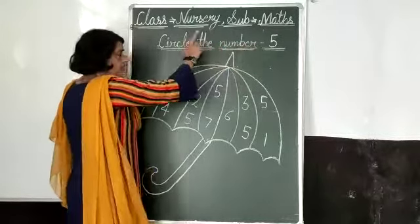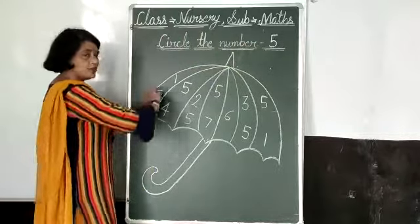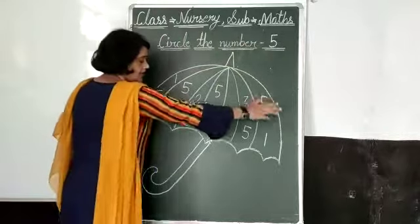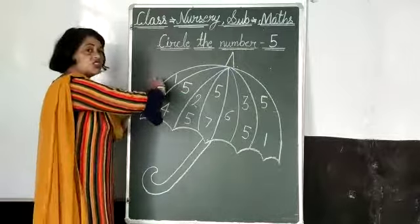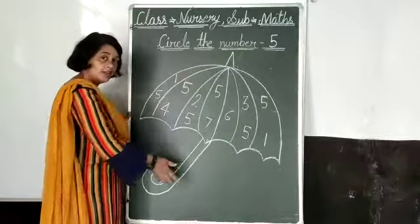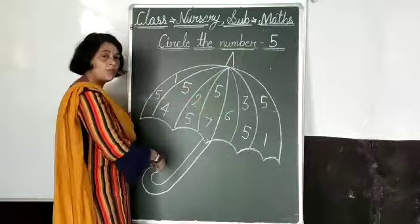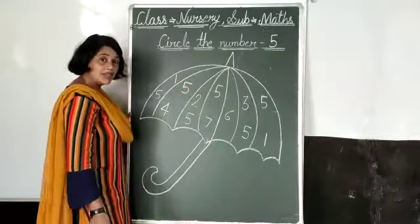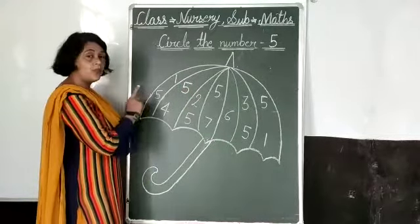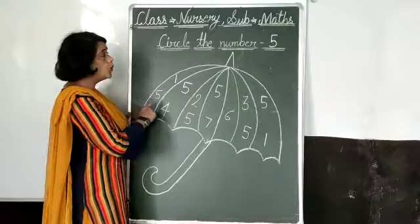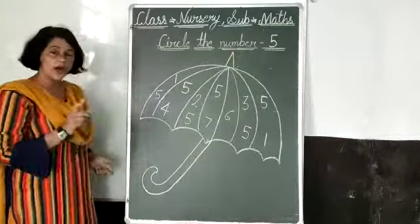Number 5 — you can circle the number. This is a big umbrella. These are many numbers, we have many numbers. We have only 5 numbers to circle.